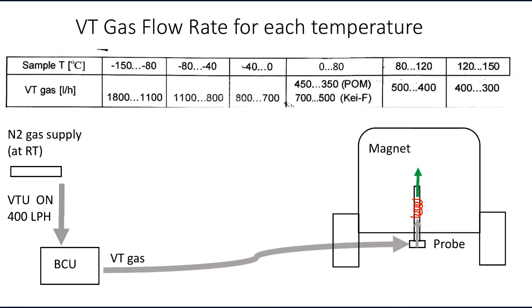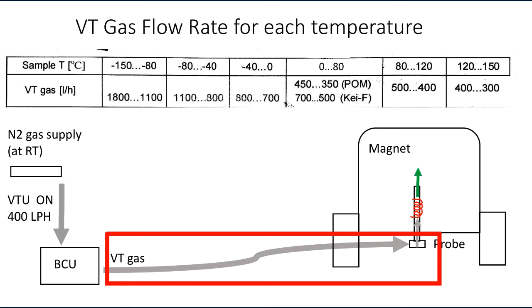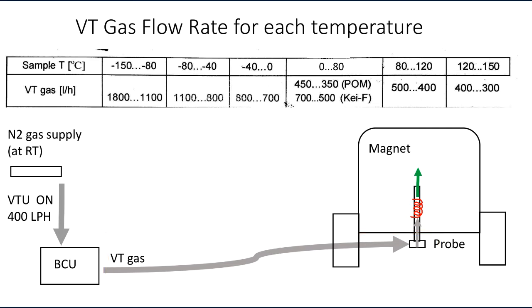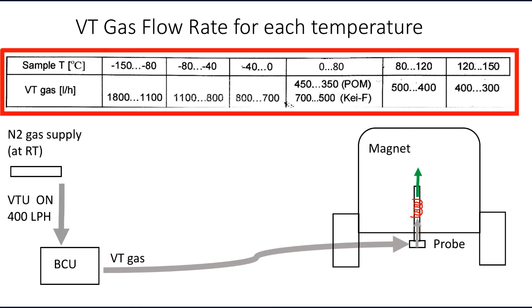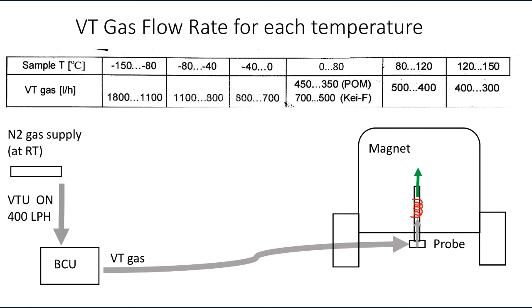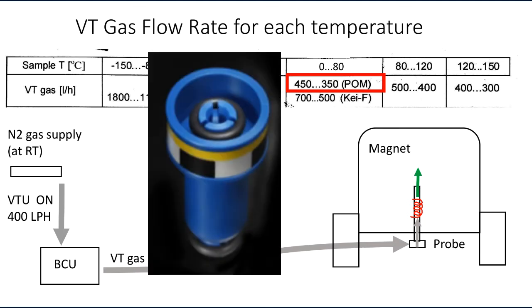It is important to supply a correct amount of VT gas to the probe. VT gas flow rate depends on the temperature of your experiment. In the range below 80 degrees C you will be using a blue POM spinner, a regular spinner you use for all routine NMR experiments. In this range setting for the VT gas flow rate is 400 liters per hour.